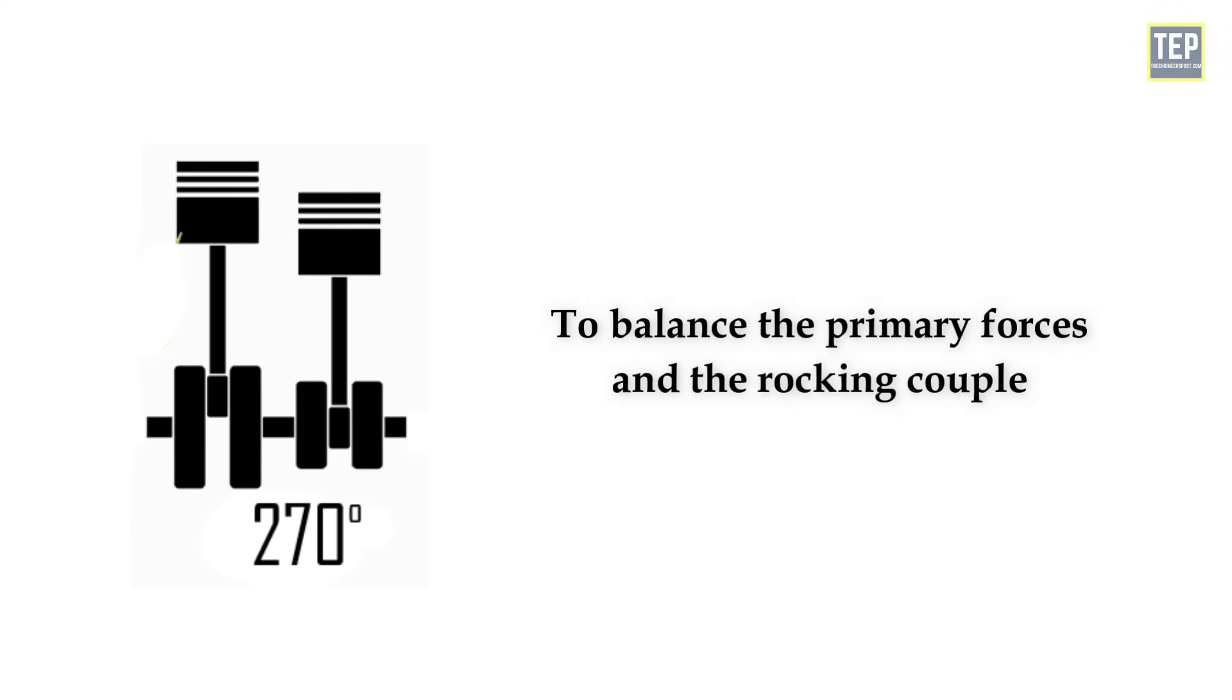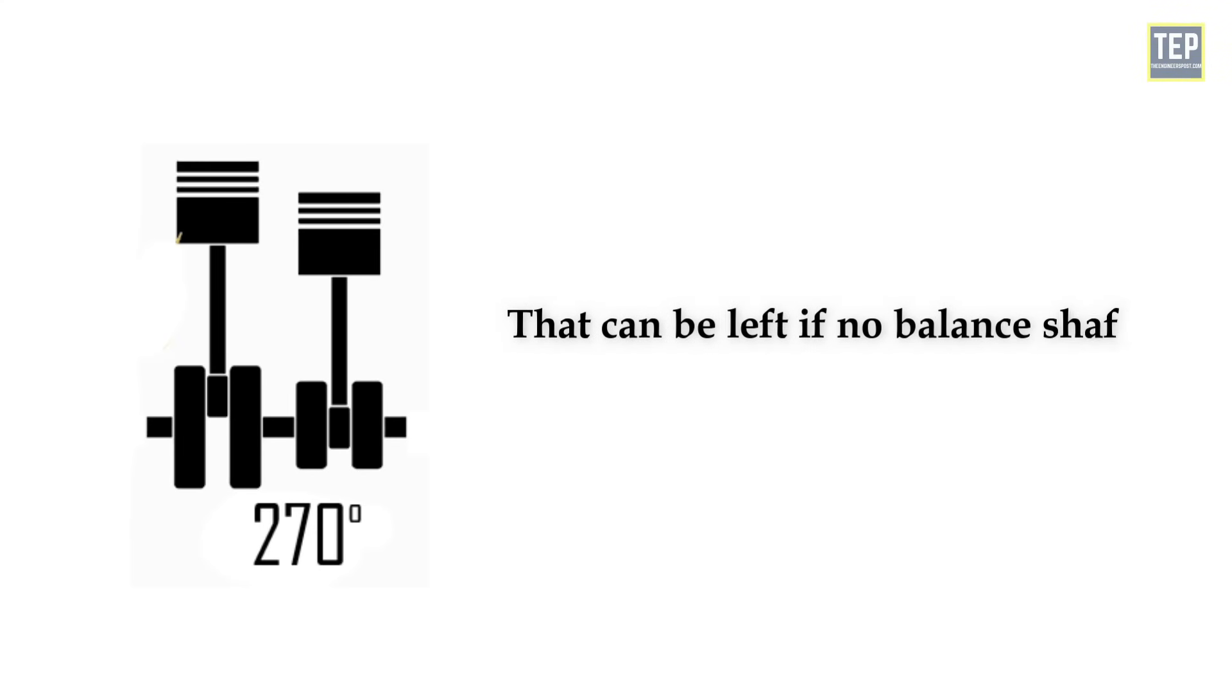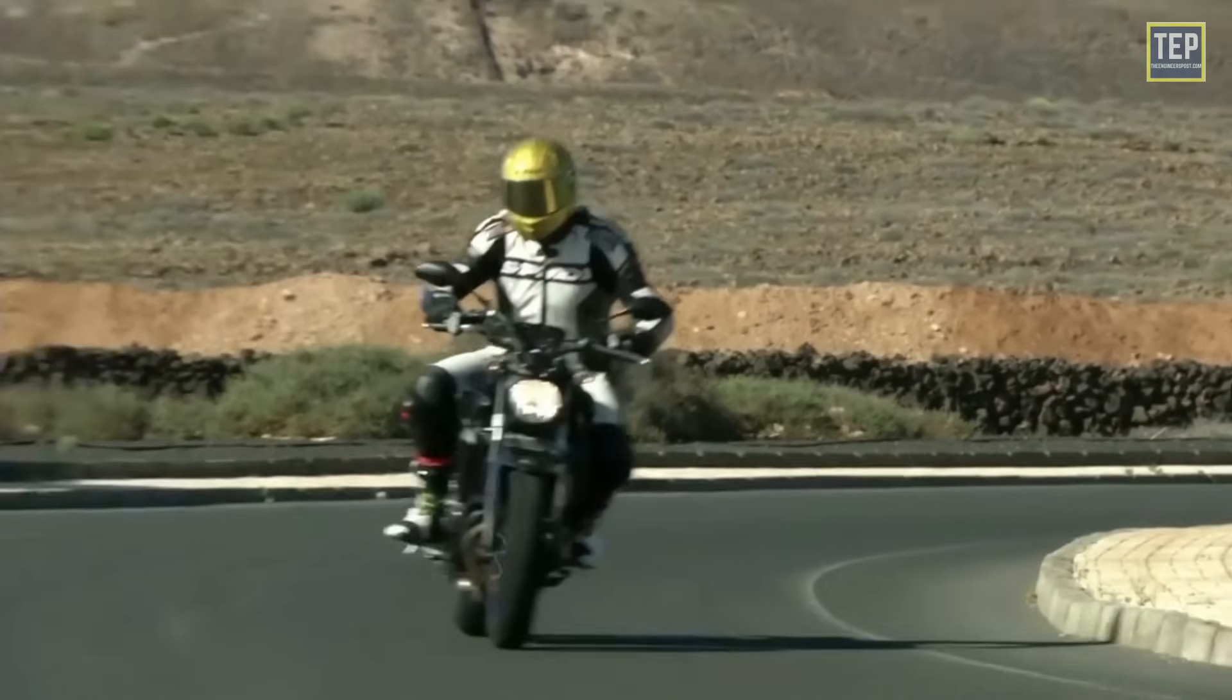Engineers use balance shafts to balance the primary forces and the rocking couple that can be left if no balance shaft or only one balance shaft is used. Secondary reciprocating forces cancel each other out in a 270-degree crank layout. That's the magic of always being in motion.